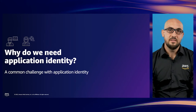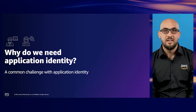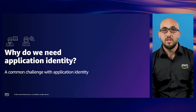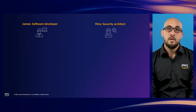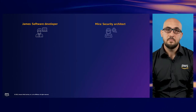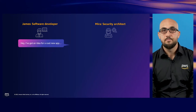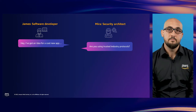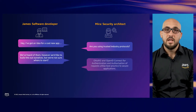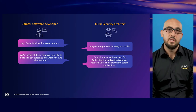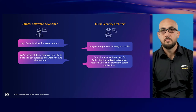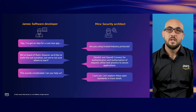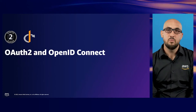So why do we need application identity? Let's meet our software developer James and our security architect Mira. These are two common personas that you may see and work with every single day. James is looking to design and build a new app and is requesting consultation from Mira. James is really interested in getting his idea for the new app out. However, Mira is curious to understand whether James is using trusted industry protocols in OAuth 2 and OpenID Connect to ensure his app is secure. James isn't familiar with these open standards, so let's dive a little bit deeper into them.